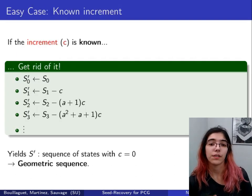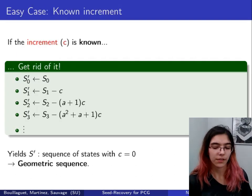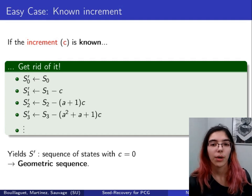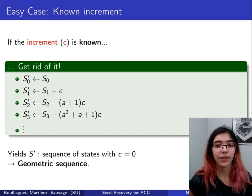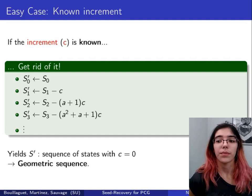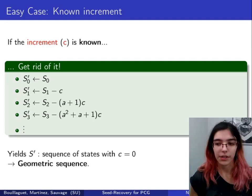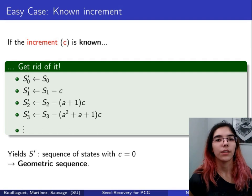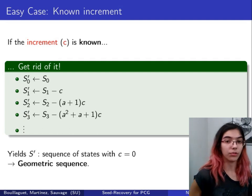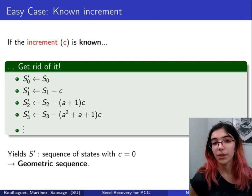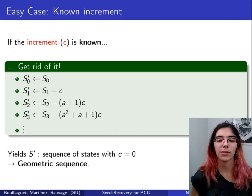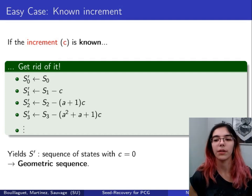When we are in the easy case, when C the increment is known, we work with an alternative sequence of states in which the increment C is removed. It will give us a geometric sequence, which will be very useful.